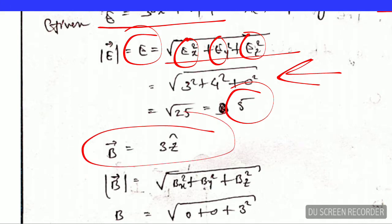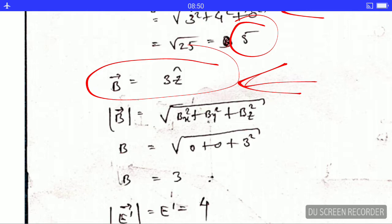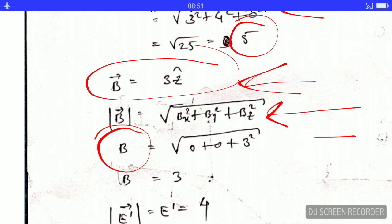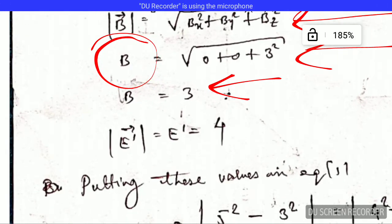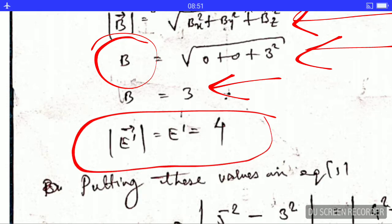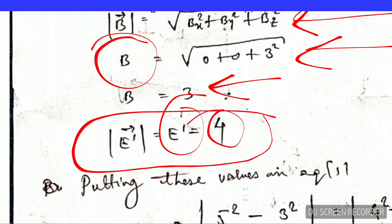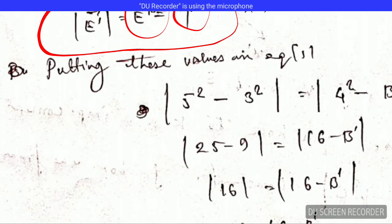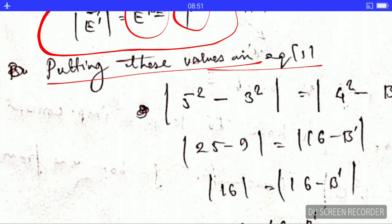The question also gives the magnetic field vector B. In the same fashion, we find the magnitude of B from its components, which gives us B equals 3. Additionally, the question gives the magnitude of the electric field measured by the observer in frame S prime, which is E prime equals 4.